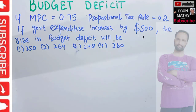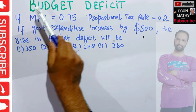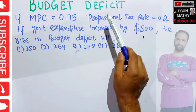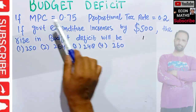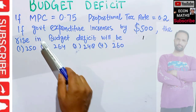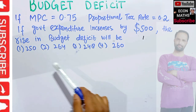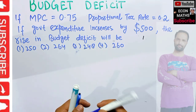In this video we will learn how to find the change in budget deficit when there is a change in government expenditure. The question is: if marginal propensity to consume is 0.75 for an economy, proportional tax rate is 0.2, and government expenditure increases by $500, the rise in budget deficit will be — options are 250, 264, 248, or 260.